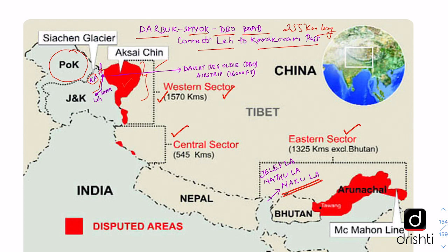In Sikkim there are three important passes. At Nakula Pass there is some confrontation going on between India and China. There is also Jalapla Pass and Nathula Pass, which is a border trading outpost between India and China. The border between Arunachal Pradesh and China is known as the McMahon Line, which China does not accept because it says that Tibet did not have the sovereignty to enter into the 1914 Simla Agreement. But the McMahon Line more or less remains the border in this eastern sector.